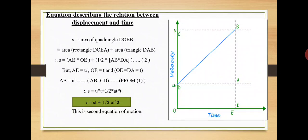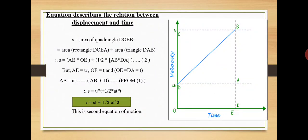Equation describing the relation between displacement and time: let us suppose that an object has uniform acceleration a and has covered distance s within time t. From the graph, the distance covered by the object during time t is given by the area of quadrilateral DOEB.